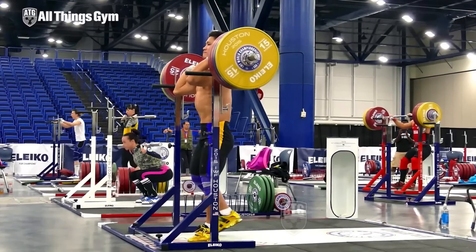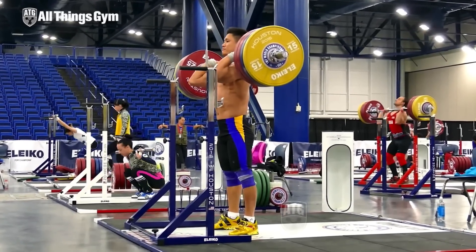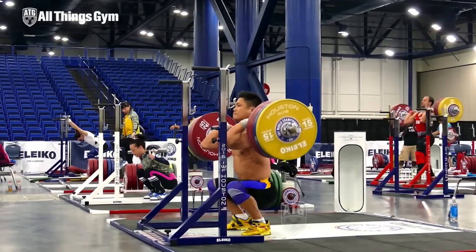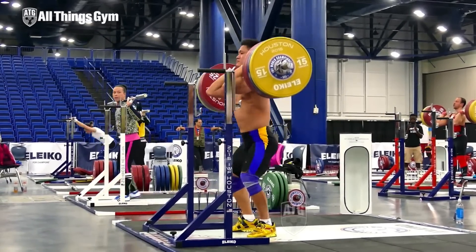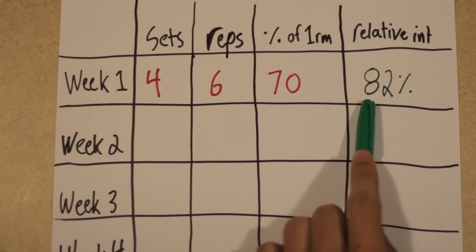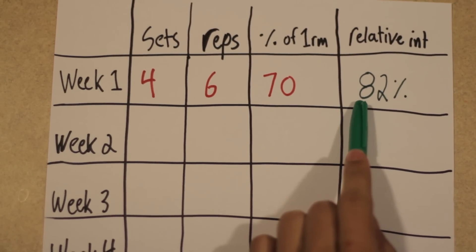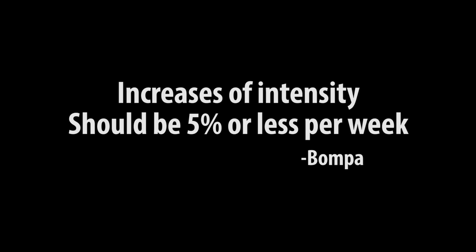The reason this number is so important is because when you start to progressively overload as you move further into your cycle, all you really have to worry about is where this number goes, where this percentage goes. It is suggested to take increases of 5% or less per week in relative intensity.